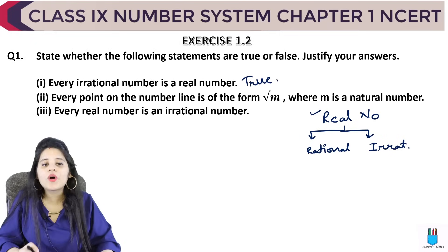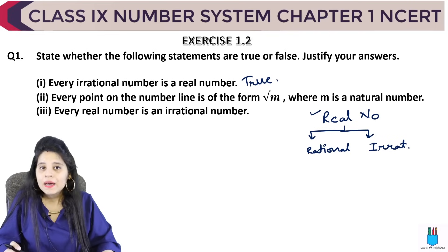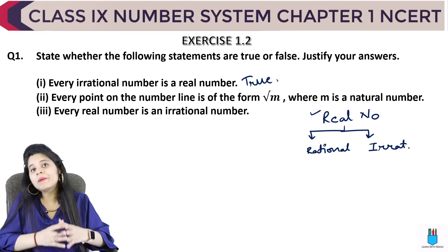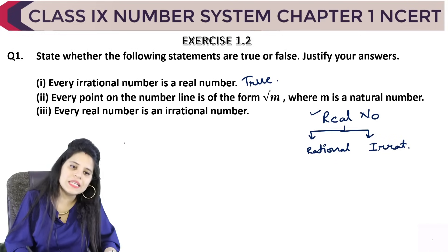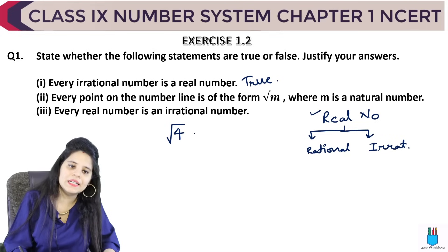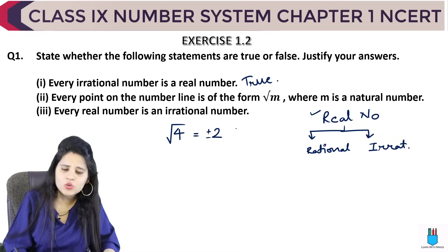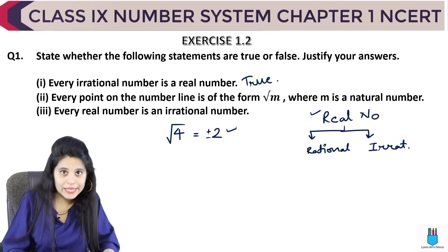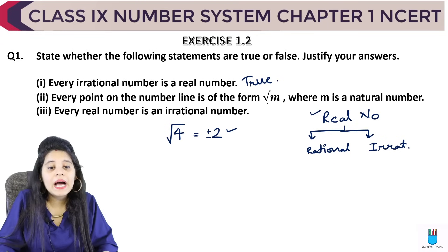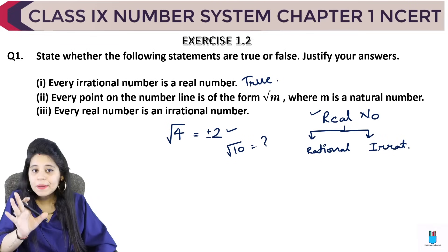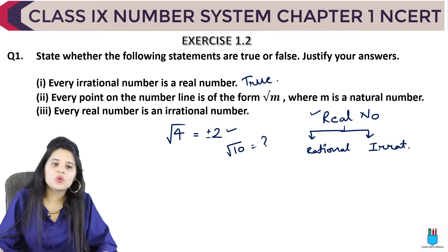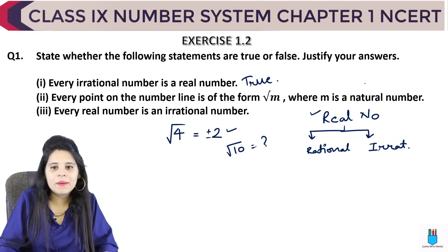Next: every point on the number line is of the form √M, where M is a natural number. Now, if I take √4, that equals 2, which is on the number line. But if I take √10, that point on the number line is not in the form √M where M is a natural number. So this statement is FALSE.